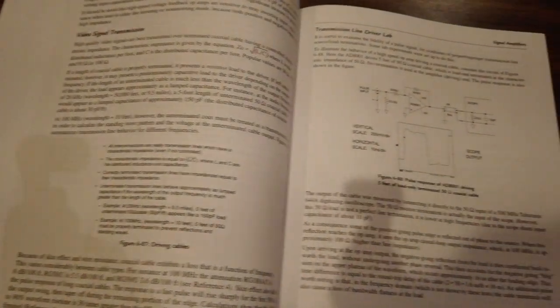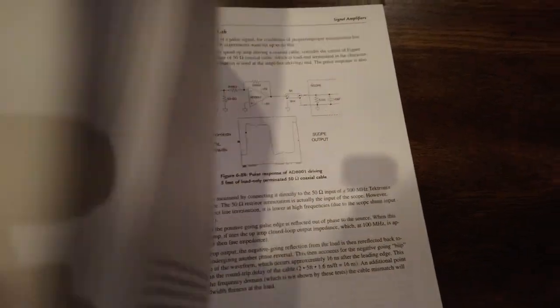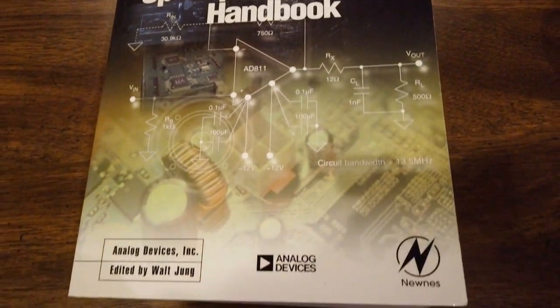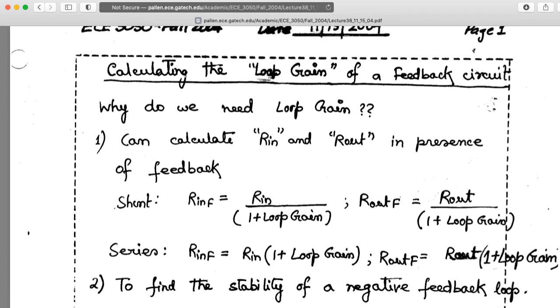You can also get wide bandwidth amplifiers like the AD8001 for video applications, but you really only want to go for that kind of bandwidth if you really need it. They can be very picky about PCB layout.